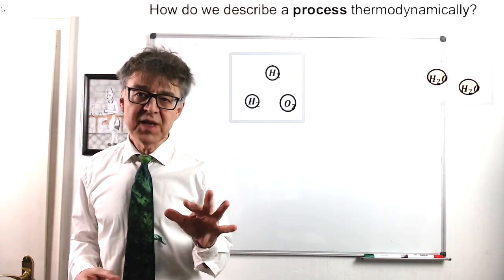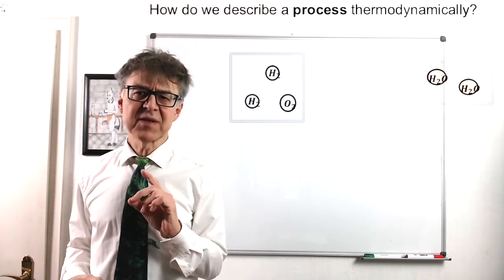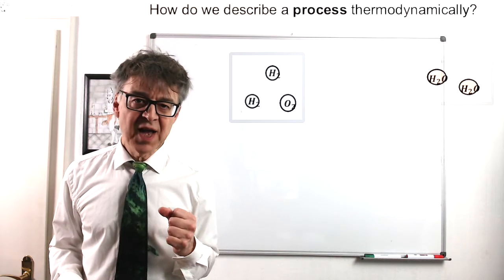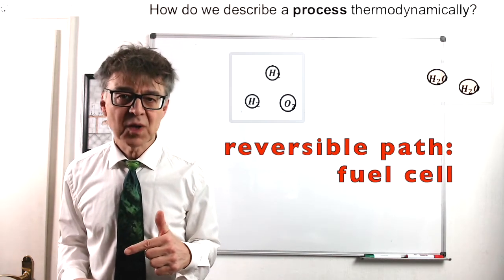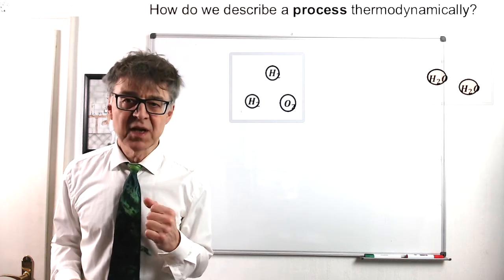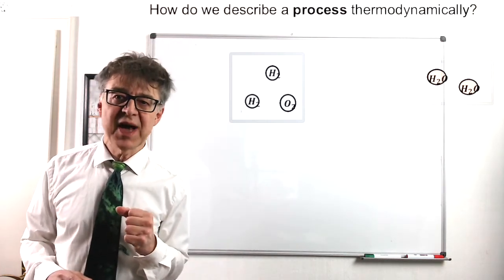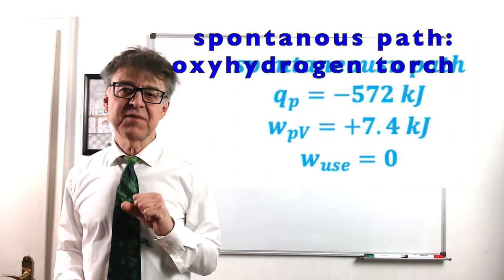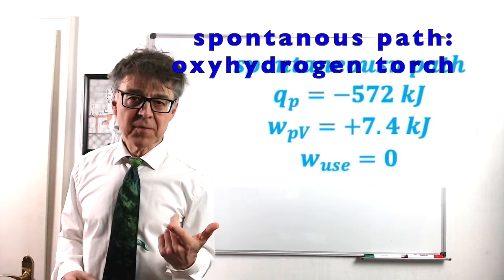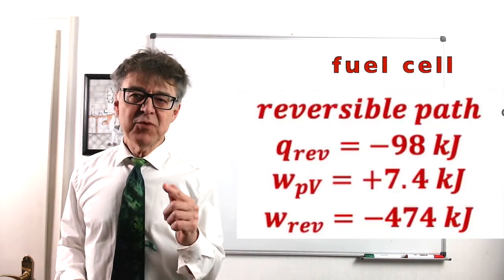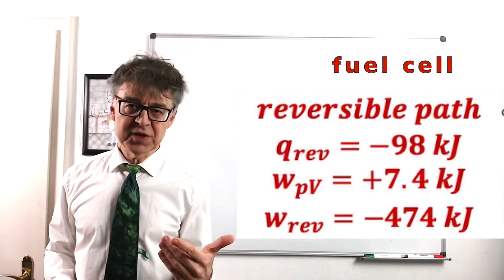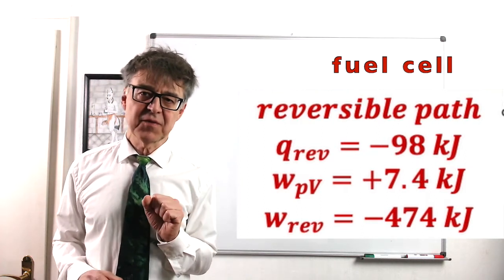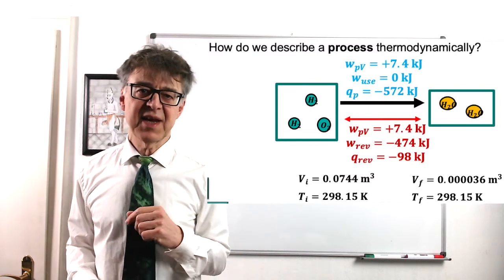The numbers for work and heat, however, may vary a lot. Let's discuss two paths of carrying out the oxyhydrogen reaction. The spontaneous path in an oxyhydrogen torch and the reversible path in a fuel cell. PV work will be the same in both paths because we always go from 75 liters to almost volume zero at atmospheric pressure. But with a torch, we get a lot of heat, 572 kJ, but no further useful work. With a fuel cell, the very same reaction releases much less heat, only 98 kJ. But in addition, we will get a considerable amount of electrical work, 474 kJ. In fact, that's what a fuel cell is for, gaining electrical energy.